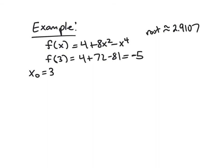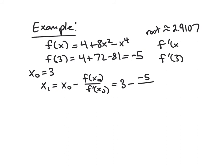Okay, well, so then the next step would be find x1. So this is going to be x0 minus f of x0 over f prime of x0. So for us specifically, this is 3 minus f of 3, which we just found to be negative 5 over, well, what was f prime of 3? Well, f prime of x is pretty easy to find here. So it's just 16x minus 4x cubed. So if I plug in 3, I get 48 minus 108, so it's negative 60.